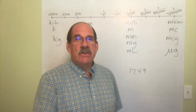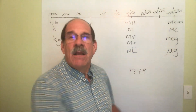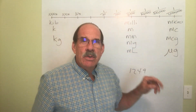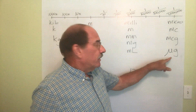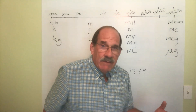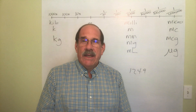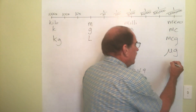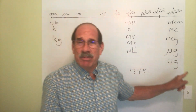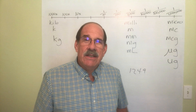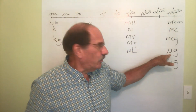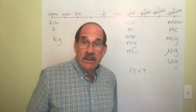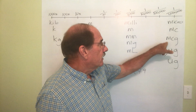Never ever write that Greek mu symbol — you better know it when you see it, but don't ever use it. Another issue: lab reports may print the microgram symbol strangely because the printer doesn't have the proper character. You'll see all kinds of odd versions — know what it's supposed to mean. You will always write mcg for micrograms.